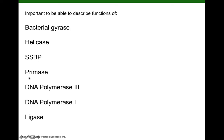Primase is a special RNA polymerase that's going to make the short RNA primer so that DNA polymerase 3, our workhorse, can take over. DNA polymerase 3 will be responsible for synthesizing most of the DNA. But when DNA polymerase 3 runs into an RNA primer, it can't remove it. So then DNA polymerase 1 will take over, get rid of the RNA primer, and replace it with DNA. Finally, ligase will be responsible for covalently linking the Okazaki fragments — the DNA fragments on the lagging strand — together.